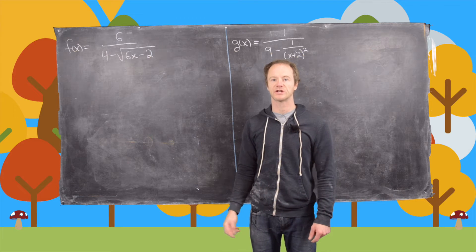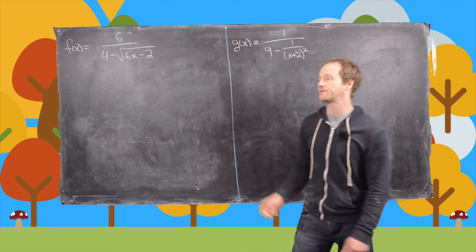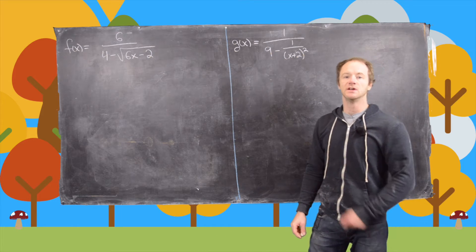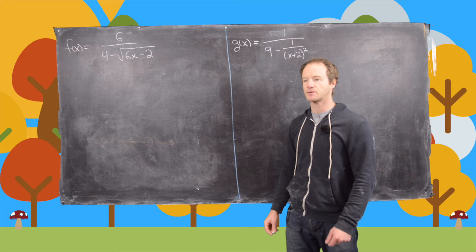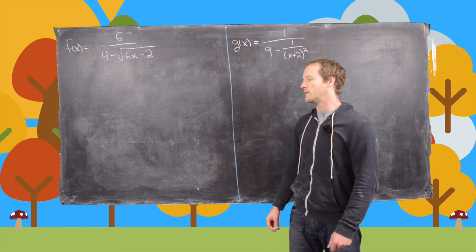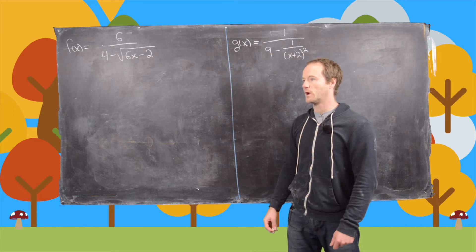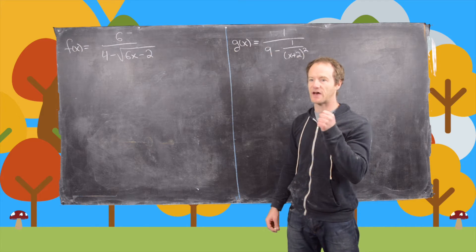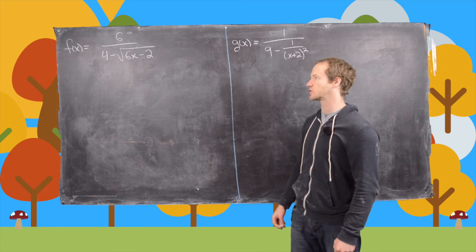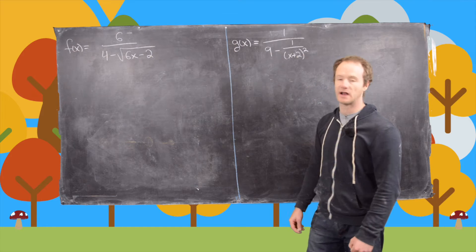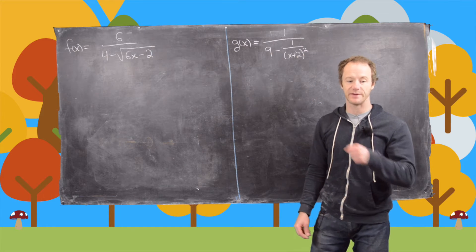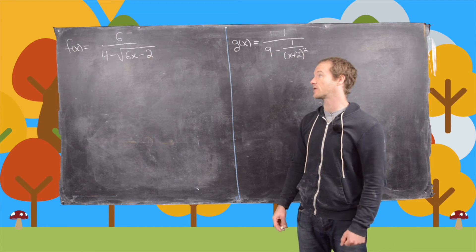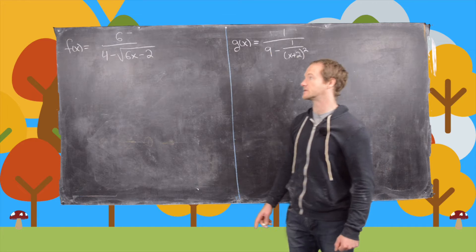In this video we're going to look at two examples of finding the domain of some functions. As a reminder, the big thing we want to make sure does not happen is that we have negatives under square roots or zeros in the denominator. That's going to be the driving force as we calculate these domains.